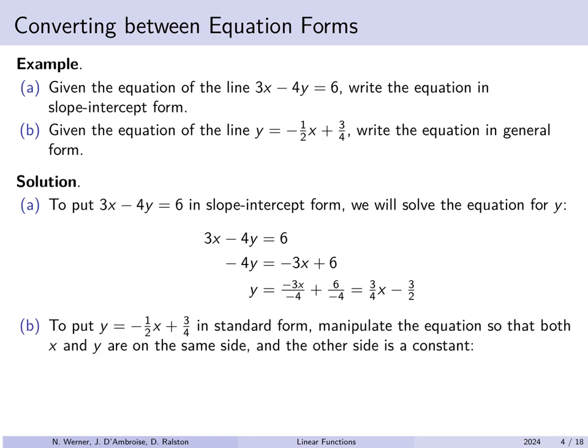For the second example we have the slope-intercept form y equals negative one-half x plus three-fourths, and we want to convert it to general form. We need all x's and y's on one side and all constants on the other. Starting from y equals negative one-half x plus three-fourths, if we add one-half x to both sides we're done: we have one-half x plus y equals three-fourths.